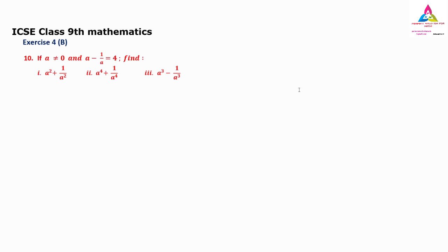Welcome to PASM First Solution of Math. I am your tutor Suman Pia. Today we are going to learn ICSC class 9th mathematics. The 10th question states: if a is not equal to 0 and a minus 1 by a is equal to 4, find three things — first, a squared plus 1 by a squared; second, a raised to 4 plus 1 by a raised to 4; and third, a cube minus 1 by a cube.